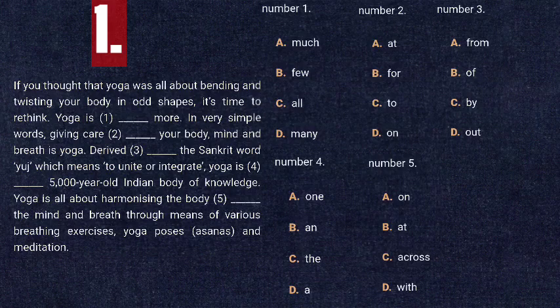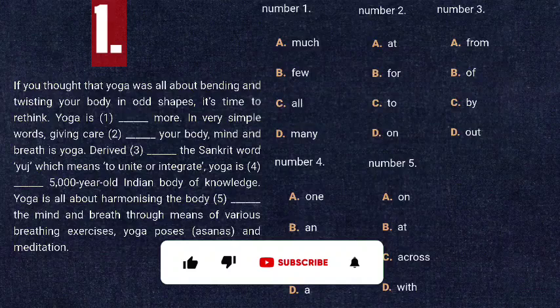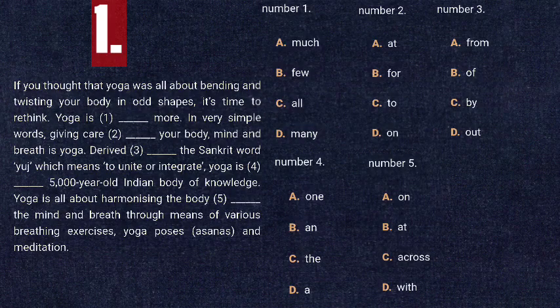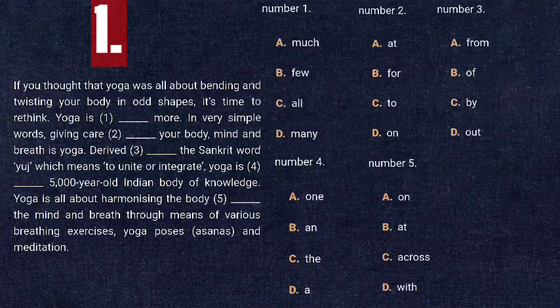For blank number two — 'giving care [blank] your body, mind, and breath is yoga' — the options are: at, for, to, on. 'At' indicates a specific place or time, 'for' indicates possession, 'on' indicates position — all are out of context. Only 'to' is left, and it is the correct option: 'giving care to your body, mind, and breath is yoga.'